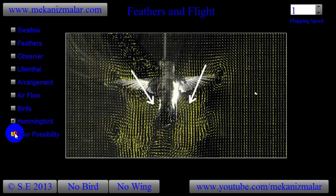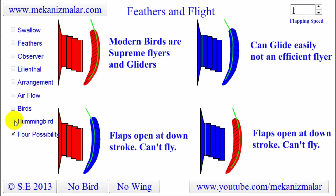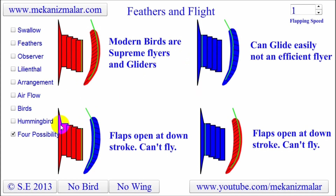This figure shows four possible combinations of feather arrangements: first, a positive feather arrangement with positive feather; second, negative feather arrangement with negative feather; third, a positive feather arrangement with a negative feather; and finally, negative feather arrangement with positive feather.